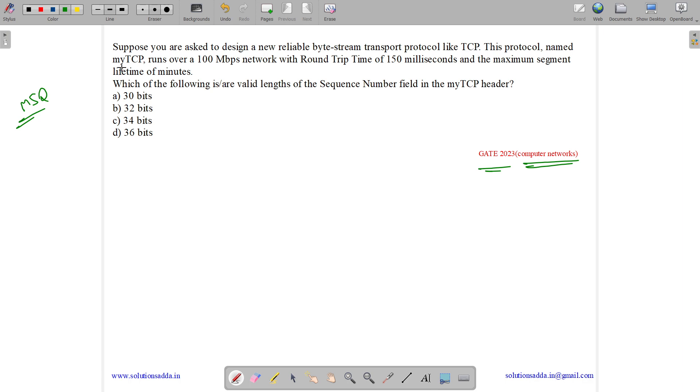This protocol named MyTCP runs over a 100 Mbps network, so the bandwidth is 100 megabits per second with a round trip time of 150 milliseconds and a maximum segment lifetime of 2 minutes.